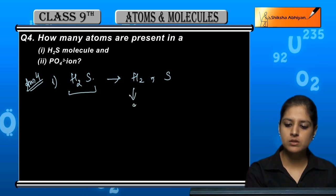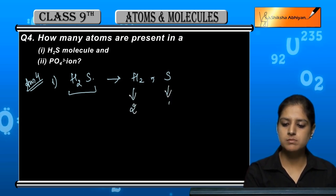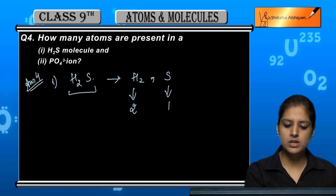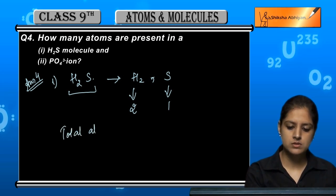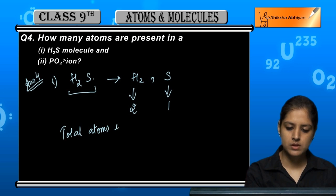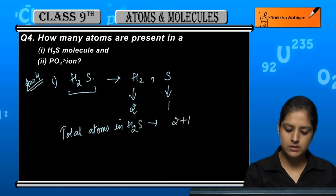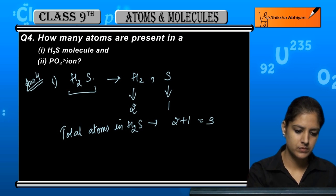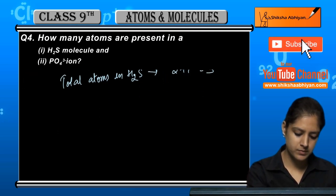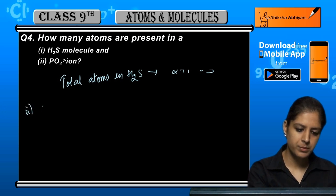H2 has two atoms and S has one atom. So total atoms in H2S: 2 plus 1 which equals 3.